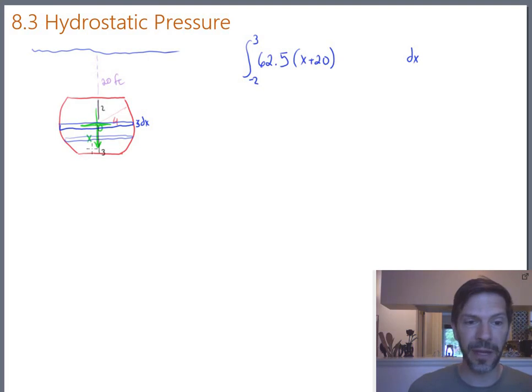Okay, really, the only thing left that we need is to be able to describe the width of one of these rectangles. And the width, that distance right there, or that distance right there. If x is down, side to side is y. And the reason I mention that is the equation of a circle centered at the origin, which this one is, is x squared plus y squared equals, what the radius is four, equals 16.